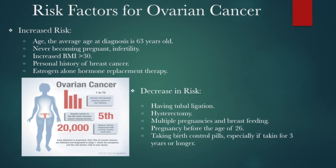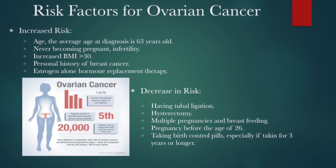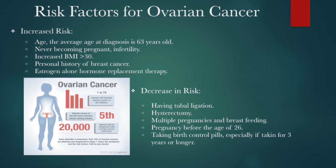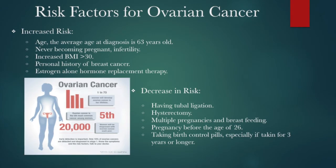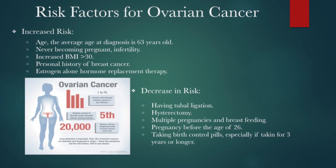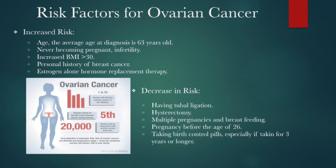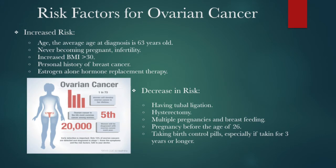On the other hand, there are some factors that can decrease a woman's chances of getting ovarian cancer. Women who have had multiple pregnancies and breastfed are at a reduced risk. The use of birth control pills for a period of three years or longer — because these stop the normal cycle of ovulation — also reduces risk. Having a tubal ligation or a hysterectomy may also help to reduce the possibility of an ovarian cancer.